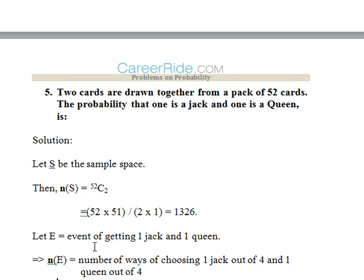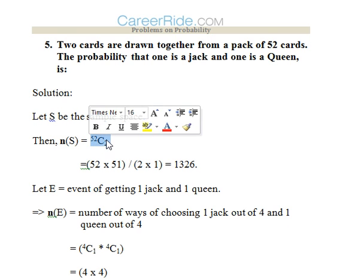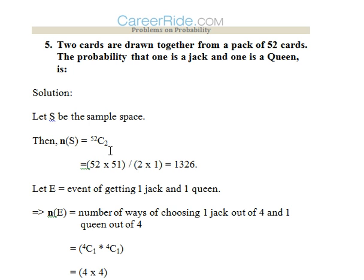Fifth question. Now two cards are drawn together from a pack of 52 cards. The probability that one is jack and one is queen. Now before attempting this question, we need to know that there are 4 jacks and 4 queens in a pack of cards. So firstly we'll calculate the sample space. We are drawing two cards out of 52, so the sample space would be 52C2. We know how to calculate nCr - that is n factorial upon (n minus r) factorial into r factorial. So here it would be calculated by 52 into 51 divided by 2 into 1. That goes up to 1326.